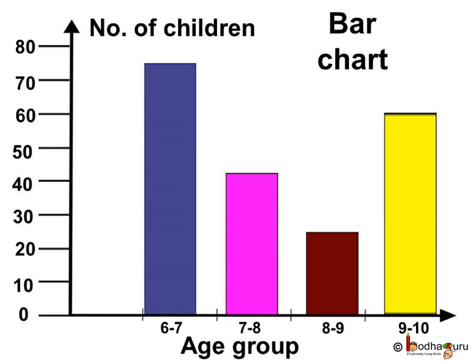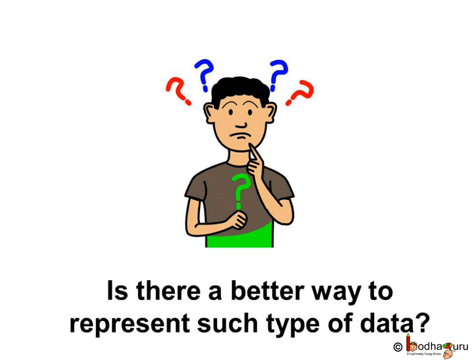If you notice carefully, the age groups are continuous: 6 to 7, then 7 to 8, then 8 to 9, and 9 to 10. So is there a better way to represent such type of data?